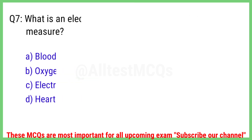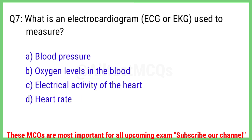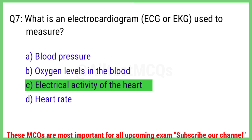Question 7. What is an electrocardiogram (ECG or EKG) used to measure? The right answer is option C: Electrical activity of the heart.